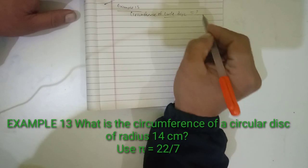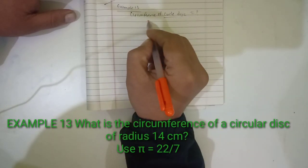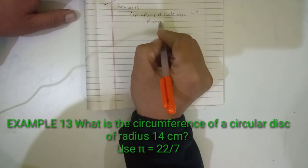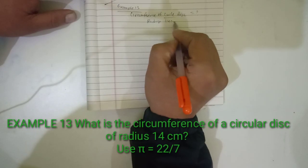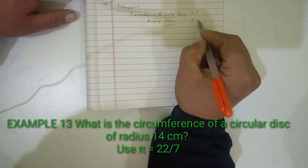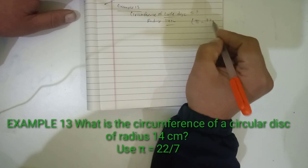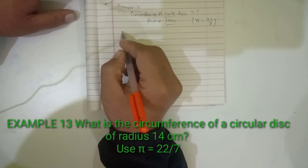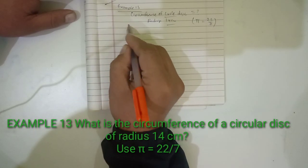The radius is given as 14 centimeters. The question also specifies we should use π = 22/7.